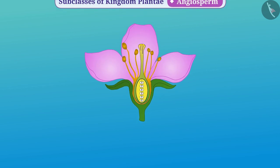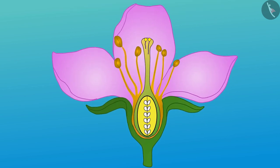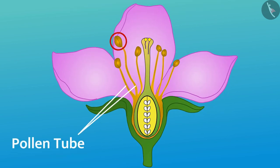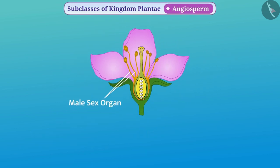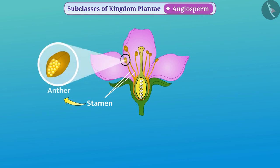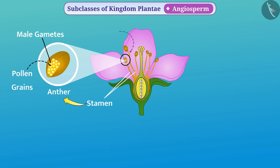If you look inside the circle of petals of the flower, you will find some thin tubes having inflated tops — these are the male sex organs of the plant called stamens. The stamen has two parts: the upper inflated part is called the anther, in which the pollen grains are formed that contain male gametes. The long and thin part attached to the anther is called the filament.